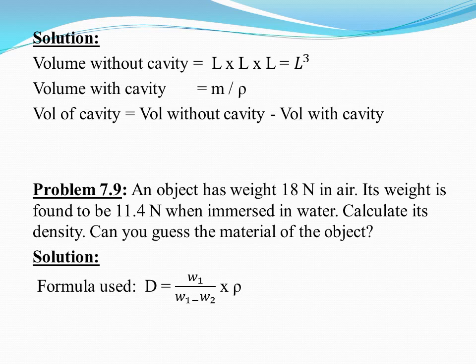Problem 7.9: An object has weight 18 N in air and 11.4 N when immersed in water. Calculate its density and guess the material. You can use Archimedes' principle with the formula d = w1 / (w1 − w2) × density of liquid.